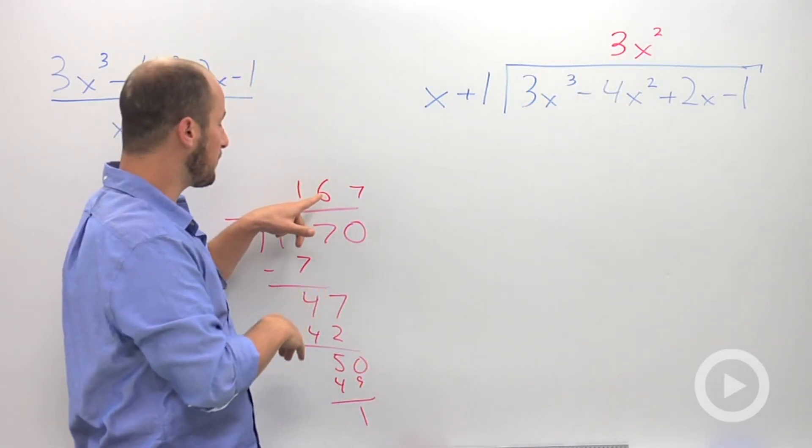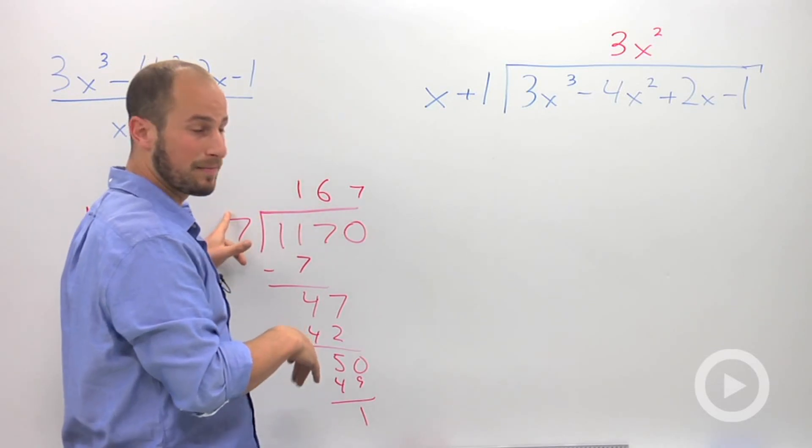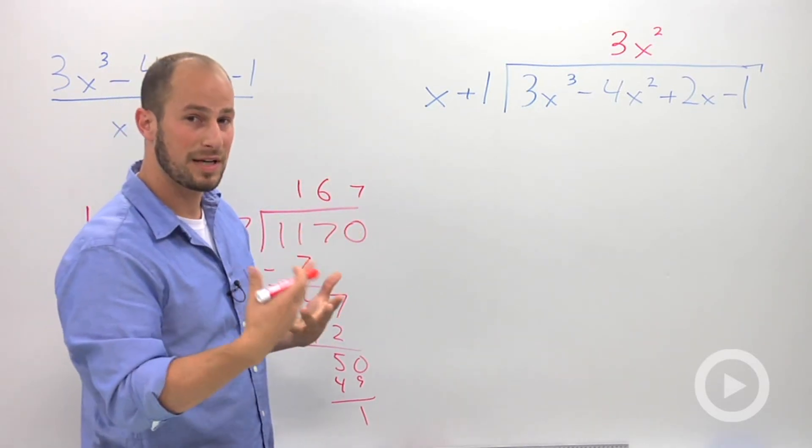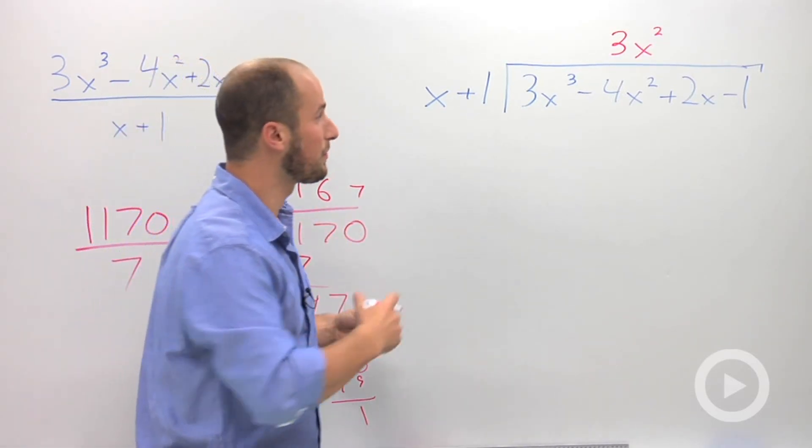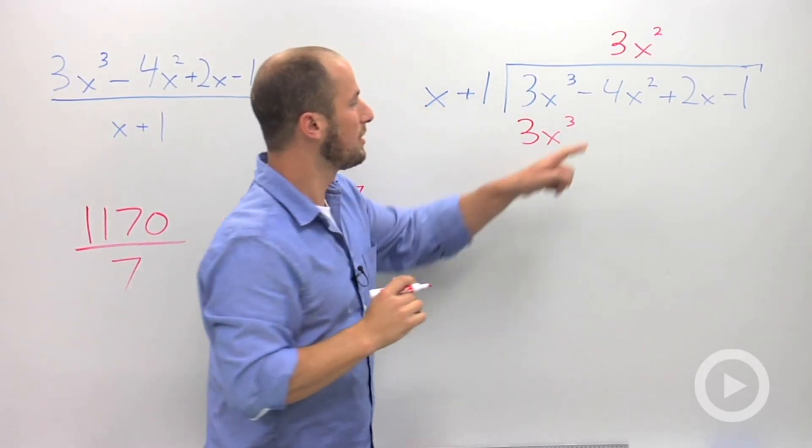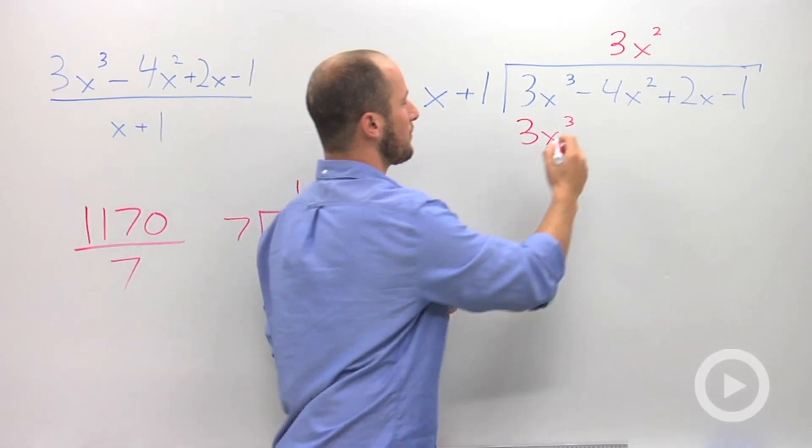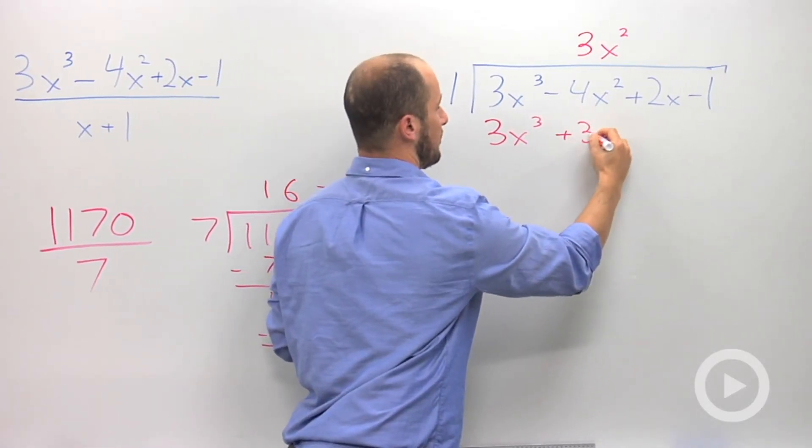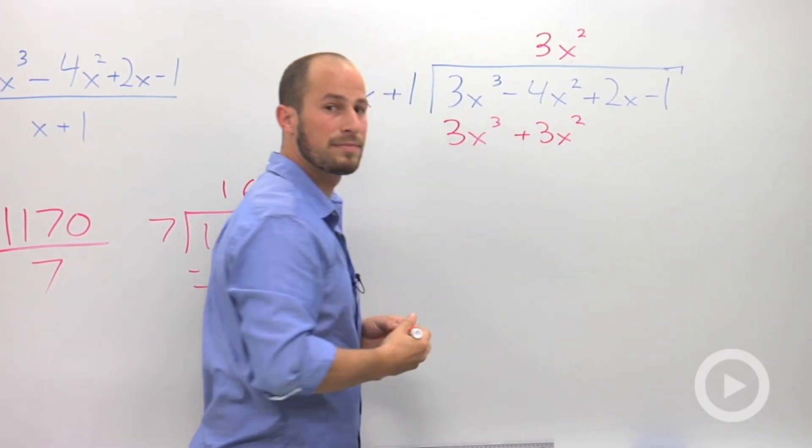Then like what we did over here, we multiplied the number on top by the number out in front. Only difference now is we have some variables, the same idea holds. Okay? So, 3x squared times x is 3x cubed, 3x squared times 1 is 3x squared, okay?